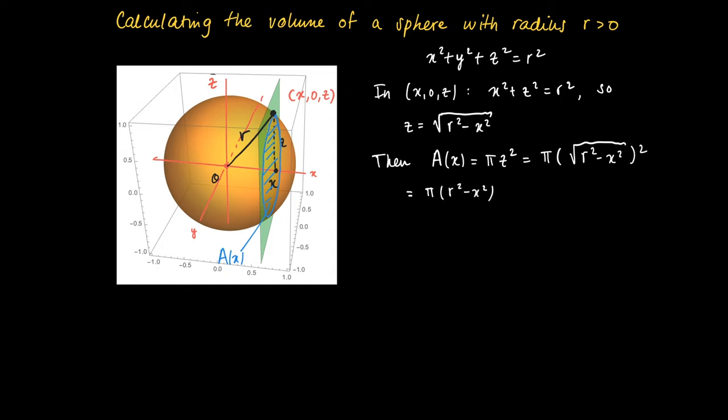But then the volume is given, then we can specify the volume, since for all x's in between minus r and r, we know A(x), so we can find the volume of this sphere with radius r larger than 0, by calculating the definite integral over minus r to r of A(x) dx.